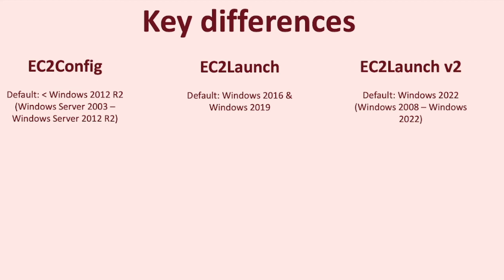EC2 config was the very first agent introduced for EC2 Windows instances. All Windows AMIs for Windows Server 2012 R2 and earlier have EC2 config service installed by default. Starting with the release of Windows Server 2016 AMIs, EC2 launch replaced EC2 config. So Windows Server AMIs for 2016 and 2019 versions come with EC2 launch agent installed by default.